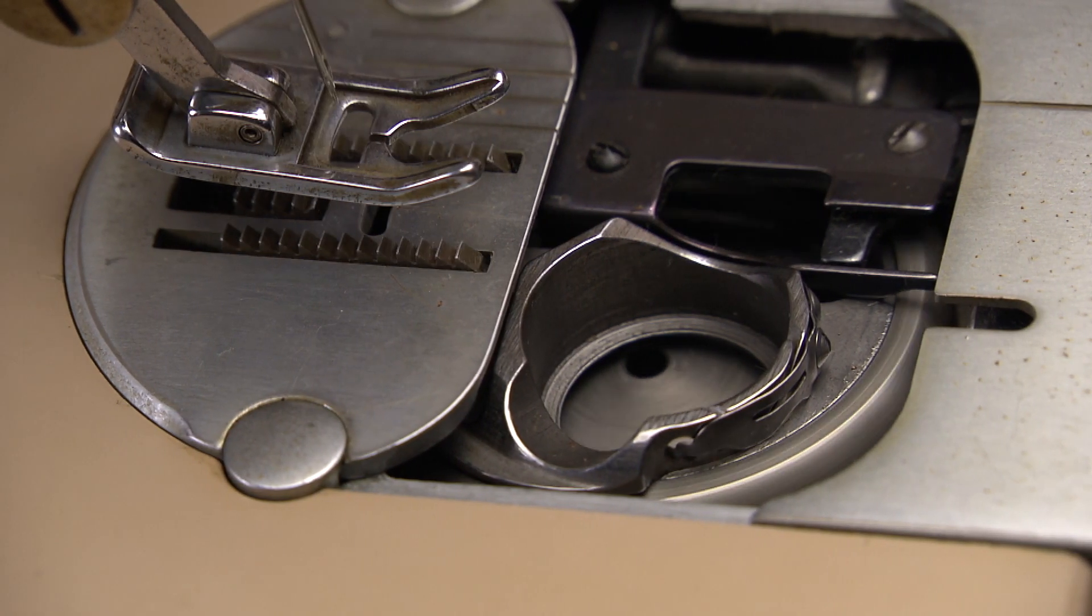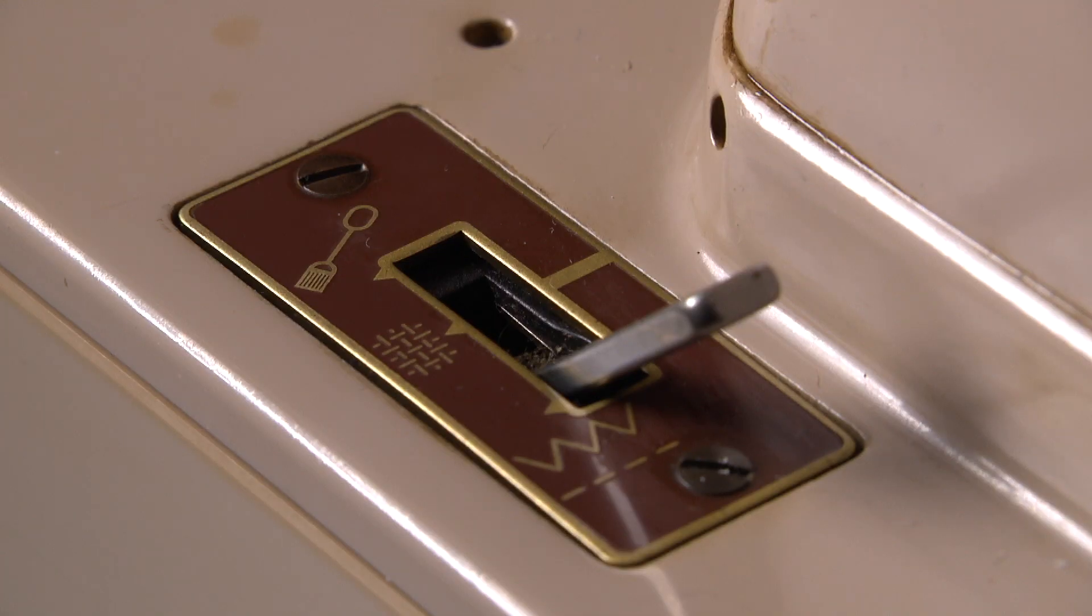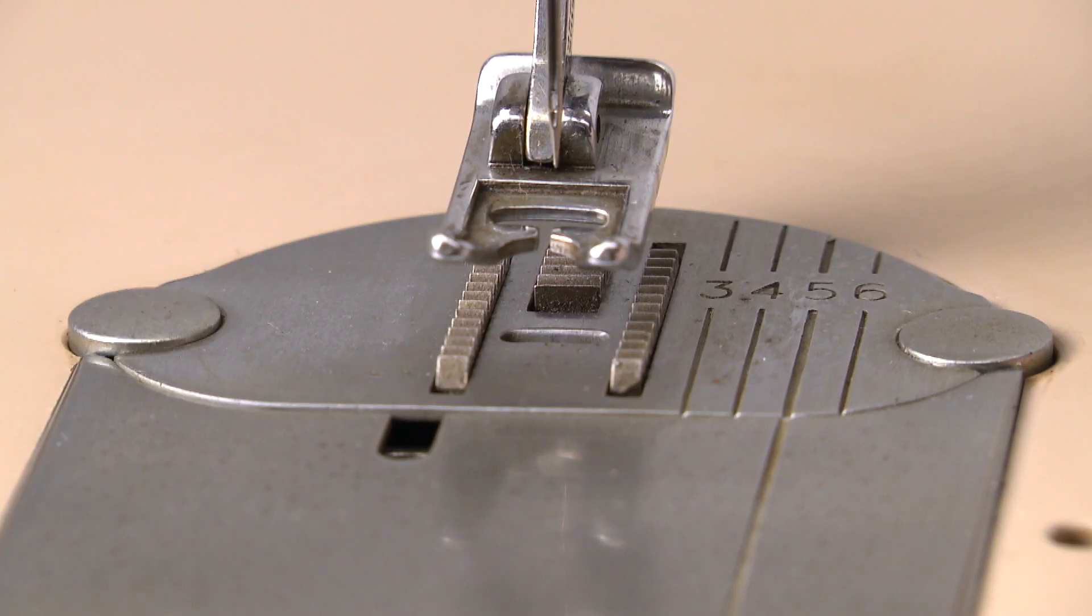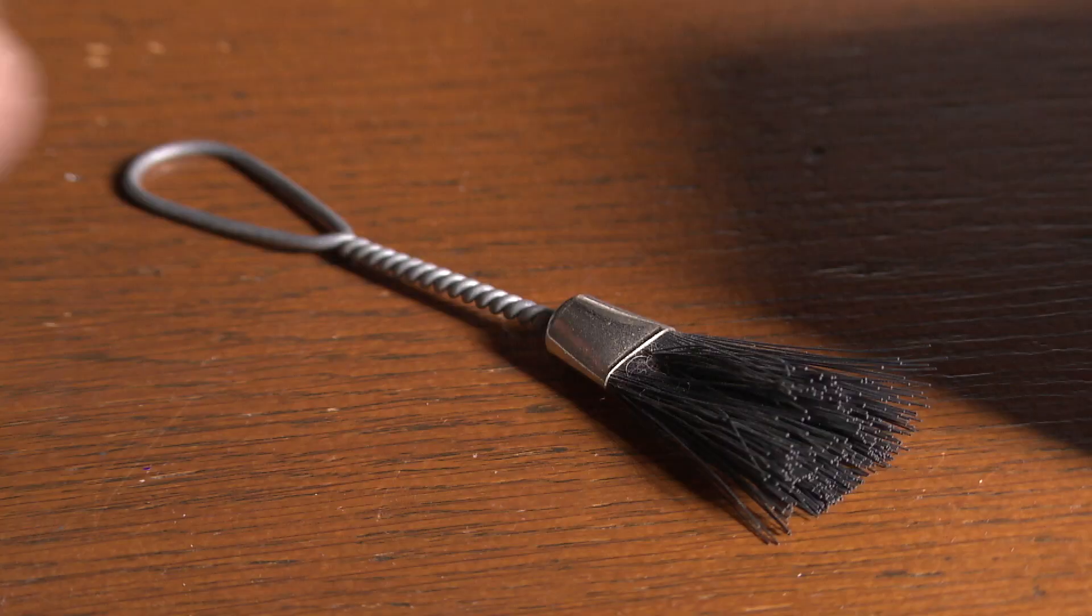One of the best places to clean is beneath the throat plate. You can slide it out when it is in the up position. Remove dust and anything that doesn't belong there.